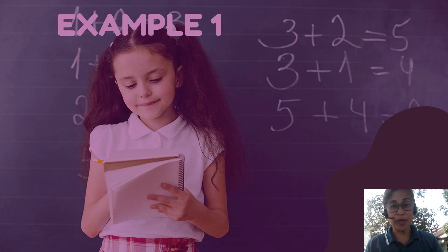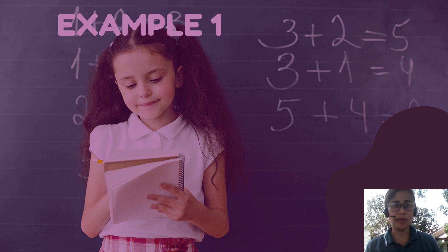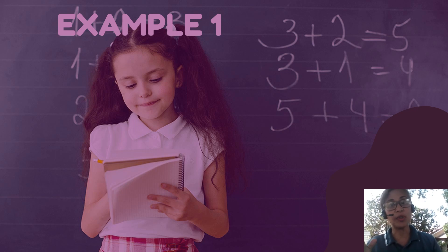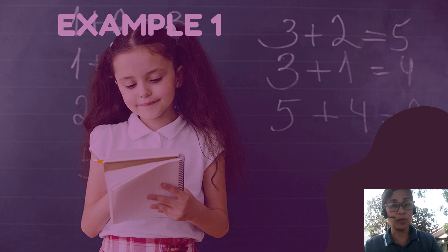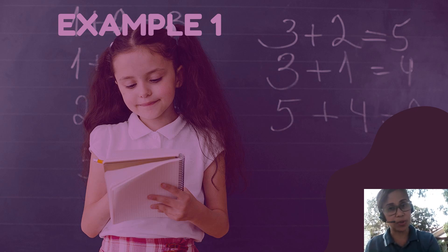Let us now apply the idea of factorial notations, which is actually very easy. Like if I say 6 factorial, it only means 6 times 5 times 4 times 3 times 2 times 1. You only have to multiply consecutive descending whole numbers until it reaches 1. So if it's 3 factorial, it is 3 times 2 times 1.